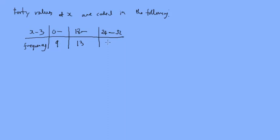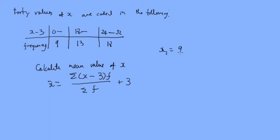So we want to calculate the mean value of x. Remember, for group data, the mean is sigma x minus 3 times the frequency over sigma f, plus 3. Now, x here is the mid value. So the first mid value x1 is 9, x2 is 21, and x3 between 24 and 32 is 28.